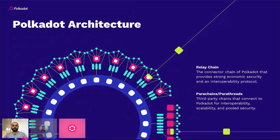There are different ways to connect to the relay chain. Parachains are the main format. There are also parathreads — if you don't need a full blockchain for your application, a parathread is not a per-block-basis connection and may be more useful for lighter applications. Bridges also exist, so already-existing blockchains like Bitcoin can bridge to the Polkadot relay chain without being a parachain or parathread.